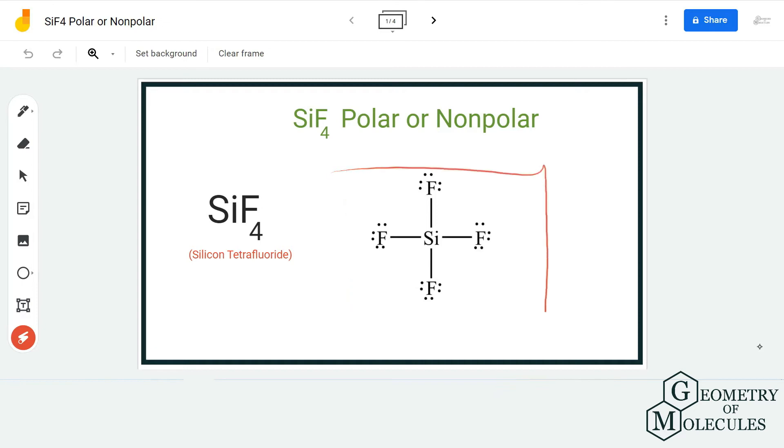First, let's look at its Lewis structure. Here, as you can see, silicon is in the center and is forming four bonds with four fluorine atoms. All the electrons are used up by the fluorine atoms to complete their octets, so there are no lone pairs on the central atom. This molecule seems to be symmetrical,